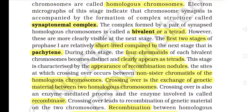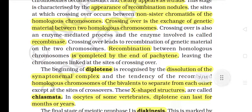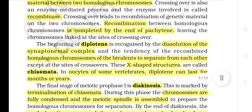The first two stages of Prophase I are relatively short-lived compared to the next stage — pachytene. During pachytene, the four chromatids of each bivalent chromosome become distinct and clearly appear as a tetrad. This stage is characterized by the appearance of recombination nodules — the sites at which crossing over occurs between non-sister chromatids of homologous chromosomes. Crossing over is the exchange of genetic material between two homologous chromosomes. It is also an enzyme-mediated process and the enzyme involved is called recombinase. Crossing over leads to recombination of genetic material, which is completed by the end of pachytene, leaving the chromosomes linked at the sites of crossing over.